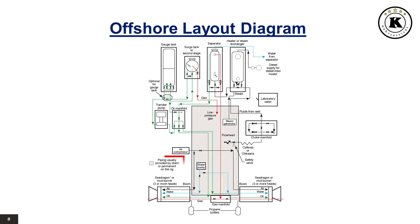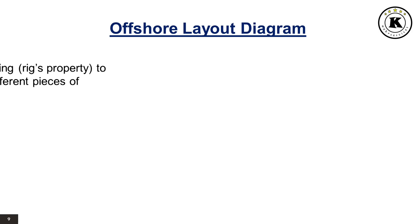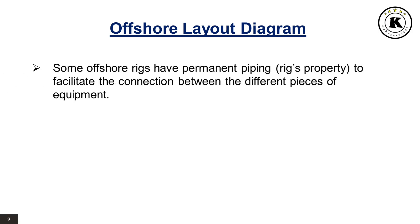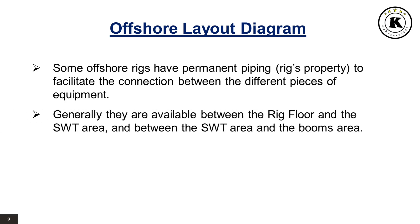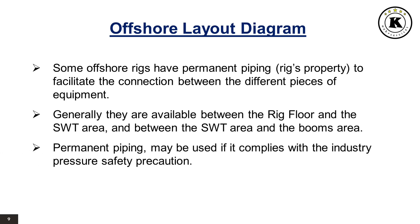Some offshore rigs have permanent piping — the rig's property — to facilitate the connection between the different pieces of equipment. Generally, they are available between the rig floor and the surface well testing area, and between the surface well testing area and the booms area. Permanent piping may be used if it complies with industry pressure safety precautions.